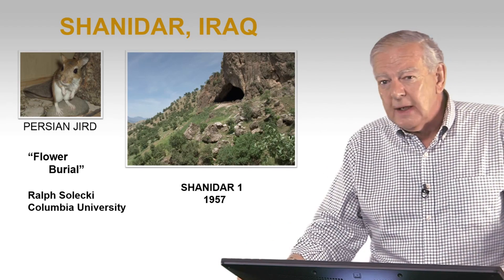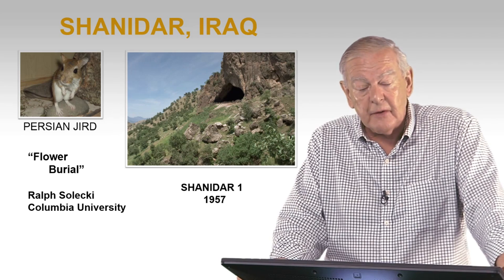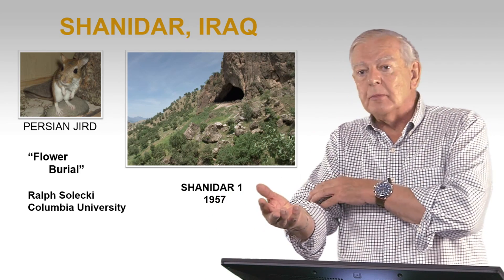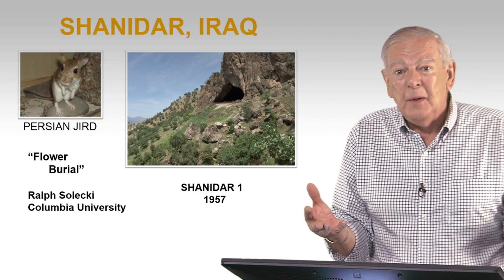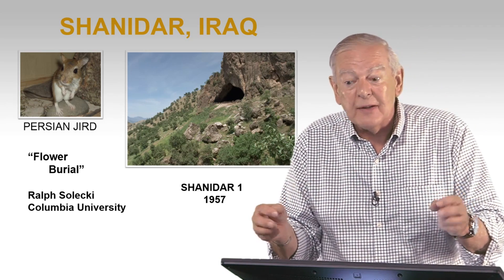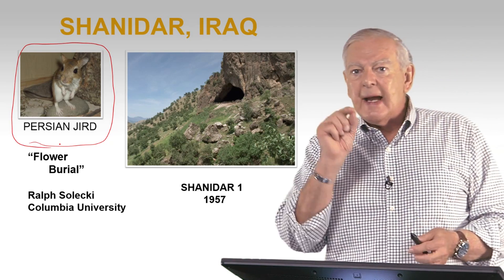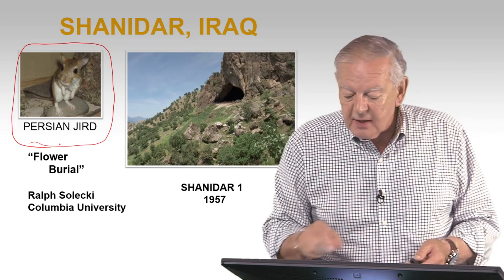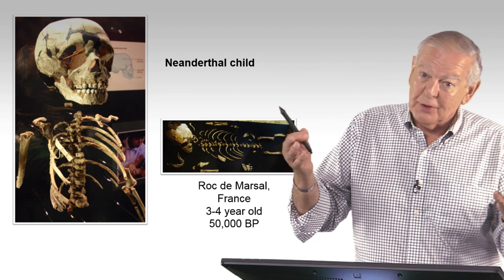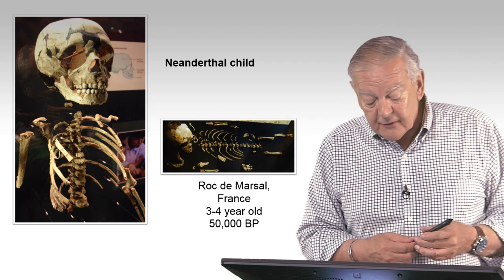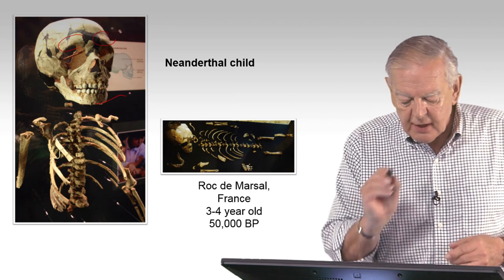I'm going to mention briefly: were Neanderthals burying their dead? There was something called a flower burial in northern Iraq at Shanidar, excavated in 1957 by Ralph Solecki. There was a partial skeleton with some healed arm injuries — so obviously there was some compassion and they were looking after each other. It was called the flower burial because lots of seeds of flowers were found with it. But someone came along and said that this little rodent, the Persian jerd, has a habit of burrowing down into the ground and storing seeds — and that's probably the explanation. We have good Neanderthal children fossils: here's one from France, a three-to-four-year-old, and already at that age, 50,000 years ago, they're beginning to develop brow ridges and don't have a chin.